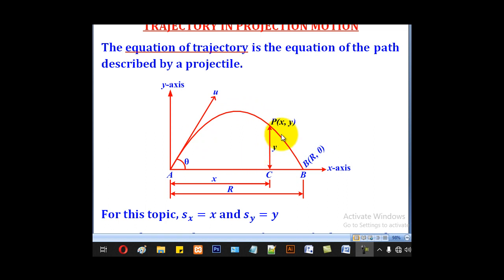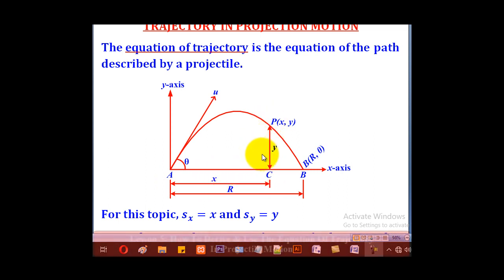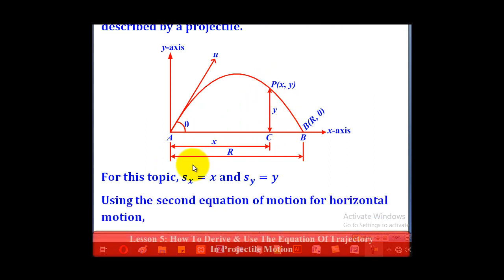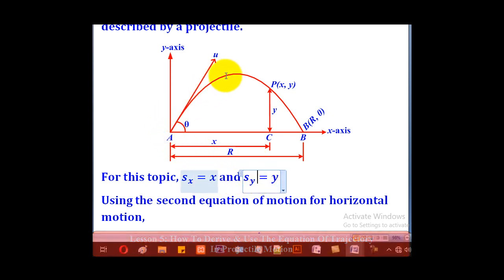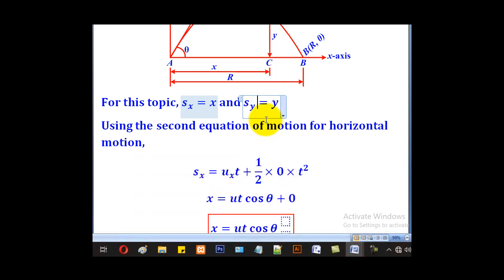In this case we shall consider horizontal displacement at any time t to be x, and the vertical displacement at any time t to be y. In other words, Sx will be considered to be x and Sy will be considered to be y. So we shall get an equation relating x and y, and that will be our equation of trajectory.